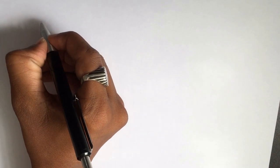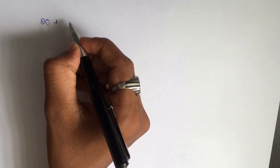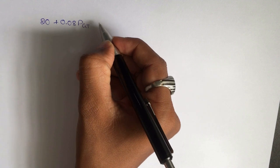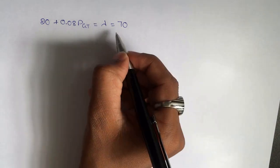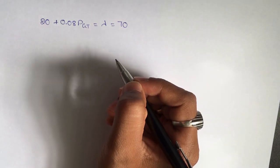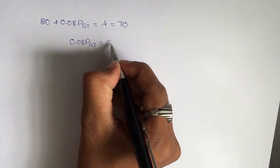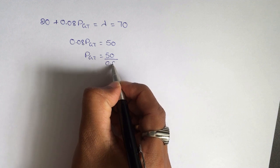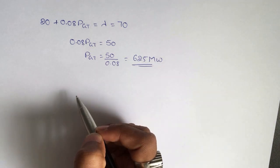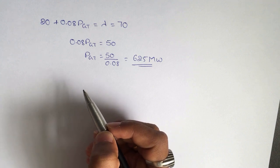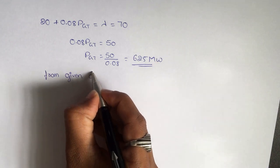Differentiating F_T with respect to P_GT gives: 20 + 0.08·P_GT = lambda = 70. Solving: 0.08·P_GT = 70 − 20 = 50, so P_GT = 50 / 0.08 = 625 megawatt. We now have the value of P_GT.